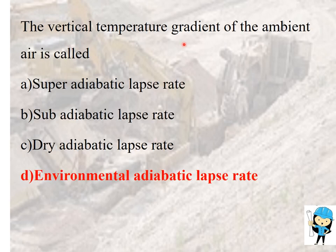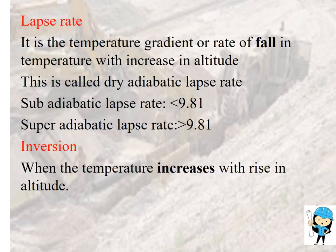The vertical temperature gradient of the ambient air is called the environmental adiabatic lapse rate. Lapse rate is defined as the temperature gradient, or the rate of fall in temperature with increase in altitude. When temperature falls with increasing altitude, it is called the dry adiabatic lapse rate.